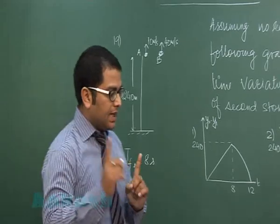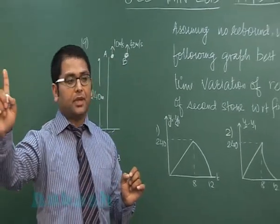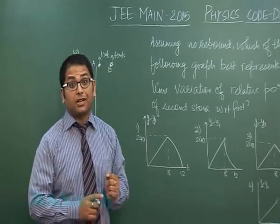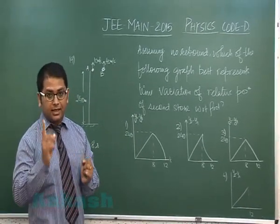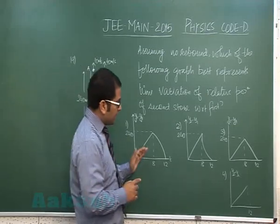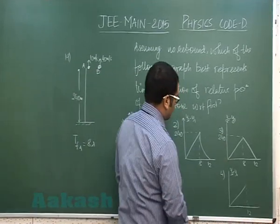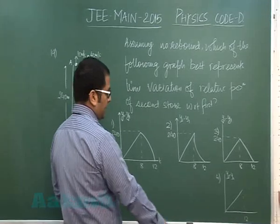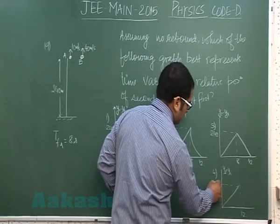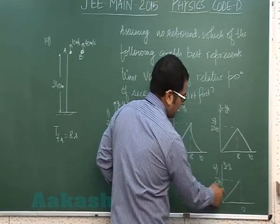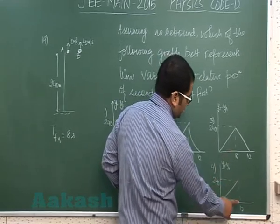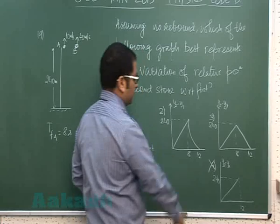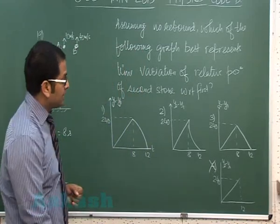So till 8 seconds the relative motion is linear in terms of displacement because the relative acceleration is 0 till 8 seconds. So that would be linear, meaning all these three options are correct and this one at 240 meters would be invalid because it shows linearity in relative position till 12 seconds. However, linearity would be there only till 8 seconds.